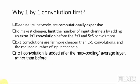The interesting thing is why we are using 1x1 convolution first. As stated before, deep neural networks are computationally expensive. To make it cheaper, the authors limit the number of input channels by adding an extra 1x1 convolution before the 3x3 and 5x5 convolutions.